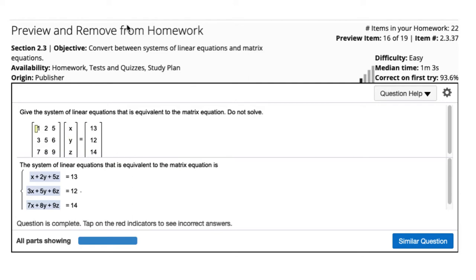So we take the top row: 1, 2, 5, and multiply it down x, y, z. 1 times x, 2 times y, 5 times z, and that equals 13. So 1x plus 2y plus 5z.